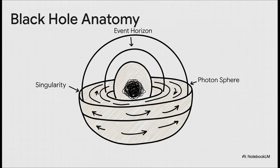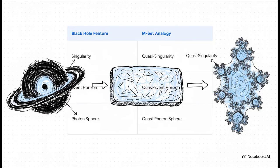Right at the heart, there's a singularity, that point of infinite density. Then you have the event horizon, the famous point of no return. And just outside that, there's this really cool area called the photon sphere, where light itself can get trapped in orbit. So, in this thought experiment, each one of those black hole features gets mapped directly onto a part of the Mandelbrot set, or M-set.